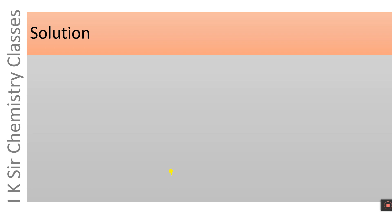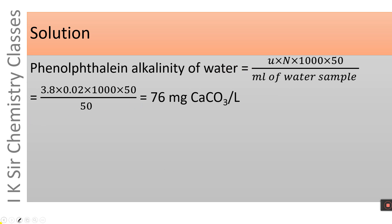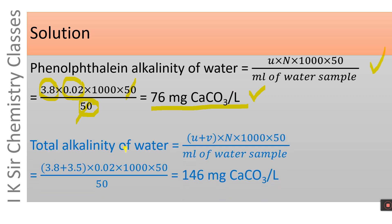Solution: Phenolphthalein alkalinity of water sample — using the formula with U = 3.8 ml, normality of H2SO4 = 0.02, multiplied by 1000 × 50, divided by 50 ml water sample. The 50s cancel, giving 76 mg CaCO3 per liter. Total alkalinity is calculated using (U + V) = 3.8 + 3.5 = 7.3 ml, giving 146 mg CaCO3 per liter. Thus, phenolphthalein alkalinity = 76 mg CaCO3/L and total alkalinity = 146 mg CaCO3/L.